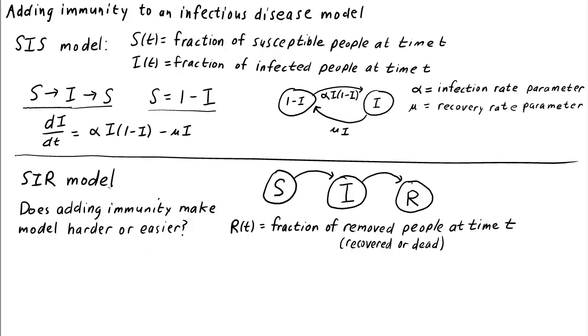In the SIS model, we could write everything in terms of i, the fraction of infected people. But in the SIR model, knowing the fraction i of infected people doesn't alone allow us to determine the fraction s of susceptible people. We can no longer write s equals 1 minus i.